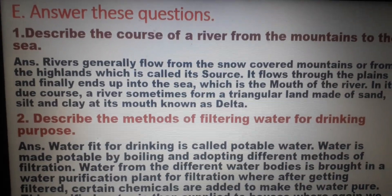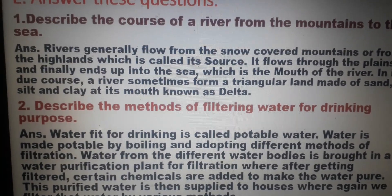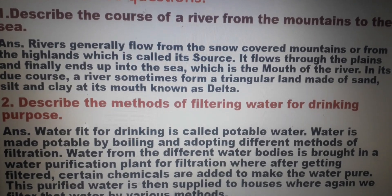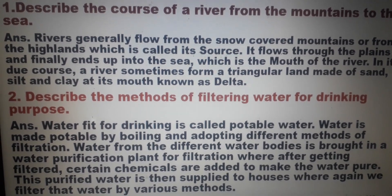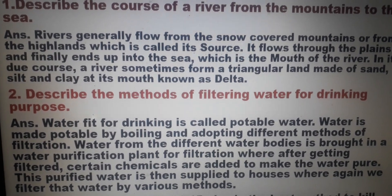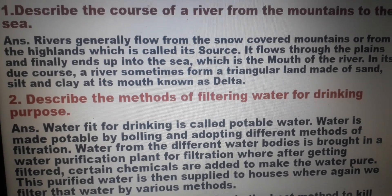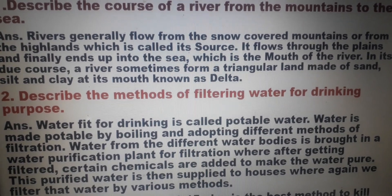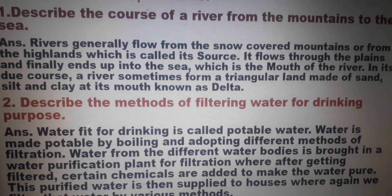Question number 1: Describe the course of a river from the mountains to the sea. Answer: Rivers generally flow from the snow-covered mountains or from the highlands, which is called its source. It flows through the plains and finally ends up into the sea, which is the mouth of the river. In its due course, a river sometimes forms a triangular land made of sand, silt and clay at its mouth, known as a delta.